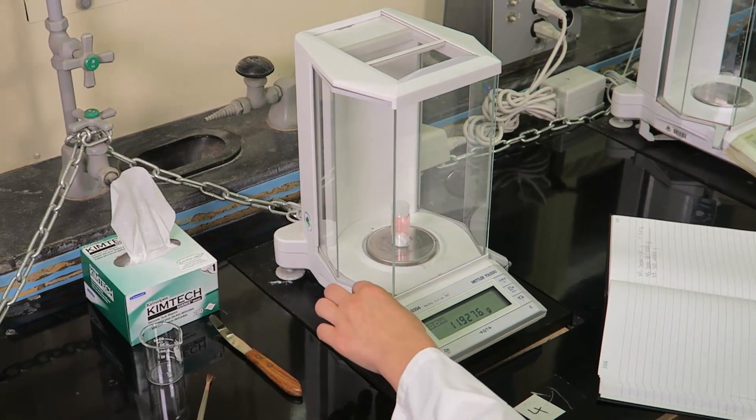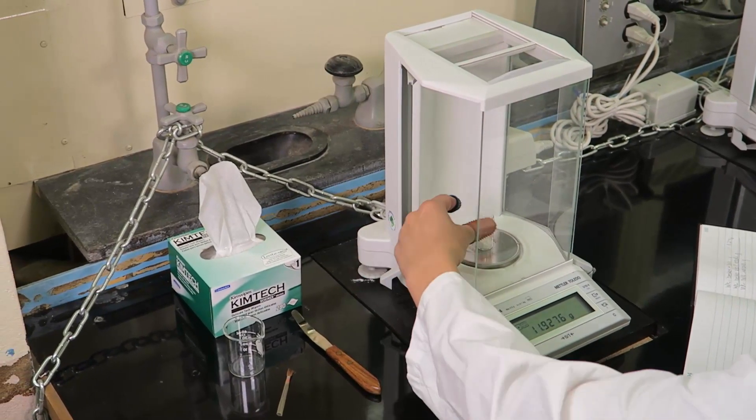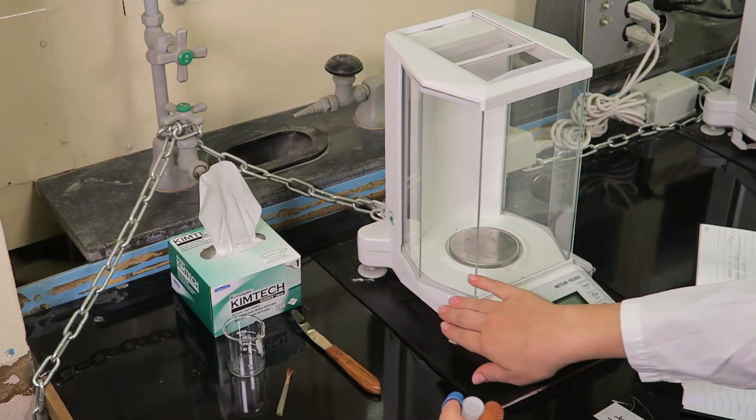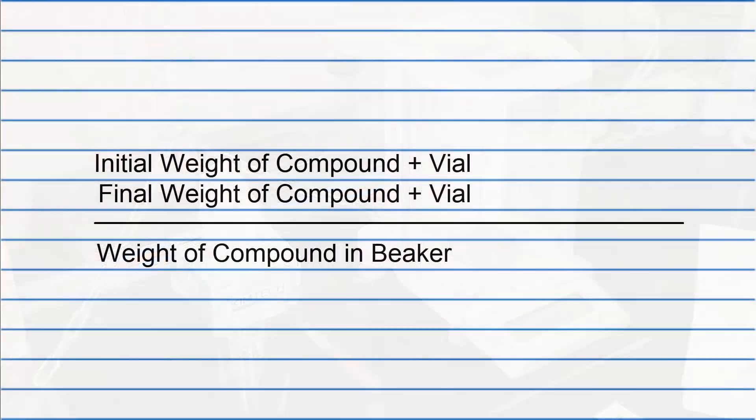Remove the container from the analytical balance and take both the container and beaker to a top loading balance. Be sure to leave the doors to the analytical balance closed whenever it is not being used. Your laboratory notebook should be set up similar to this.